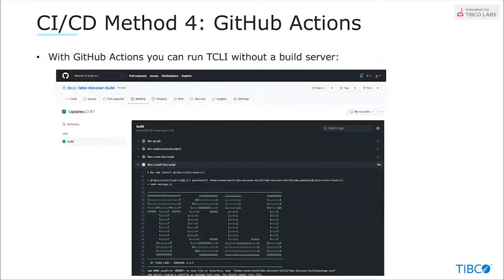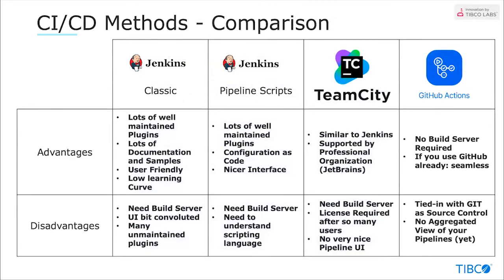GitHub Actions is nice because you don't need to set up and configure a build server — you run the TCLI on GitHub Actions and GitHub runs it for you. A quick comparison: Jenkins has lots of information and examples; Team City is backed by a professional organization; GitHub Actions requires no build server and is very easy to use if you already use GitHub. The disadvantage of GitHub Actions is that without a build server, you miss an aggregated view of all the different pipelines you have.